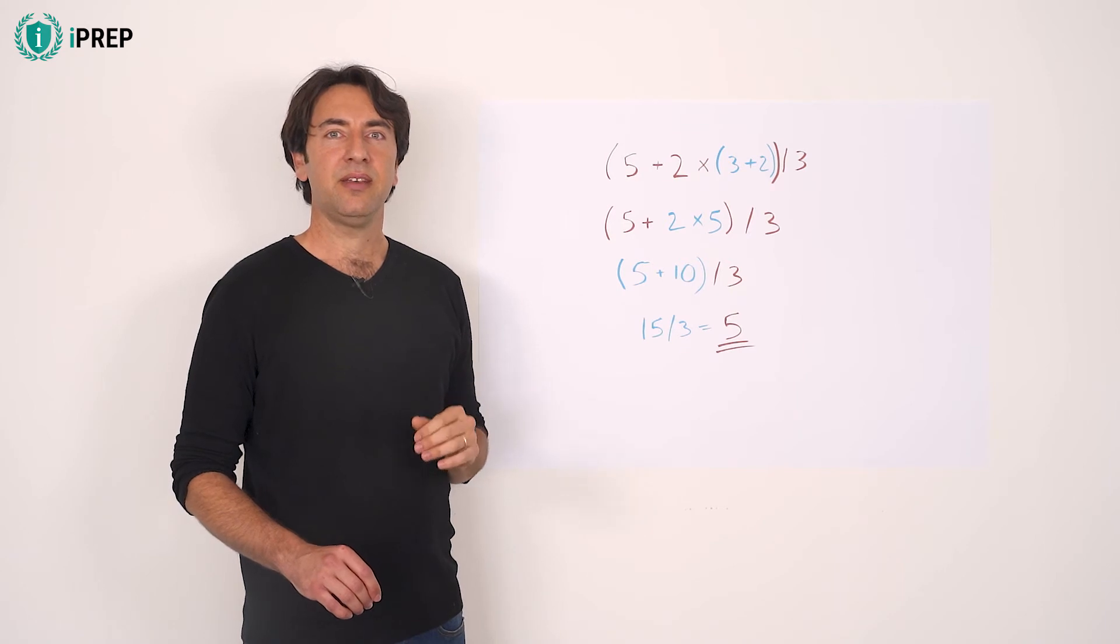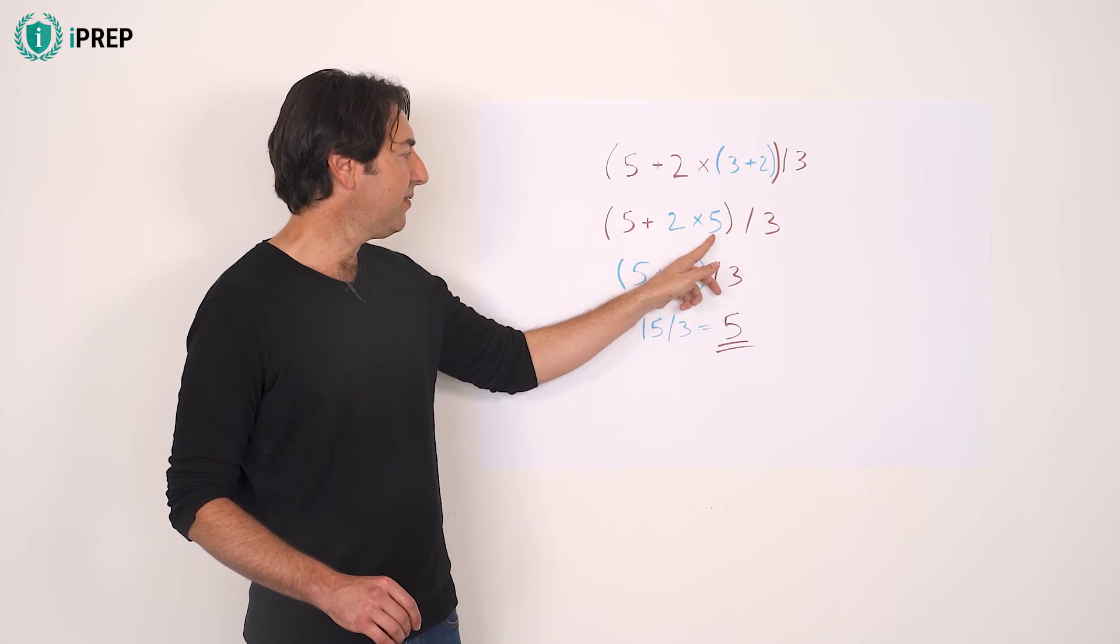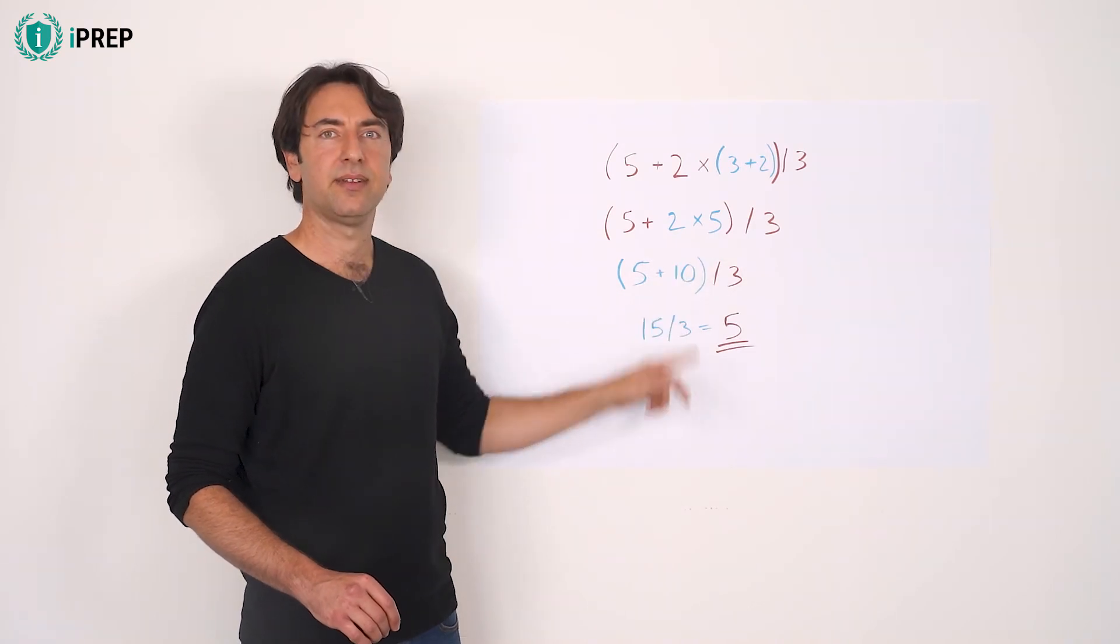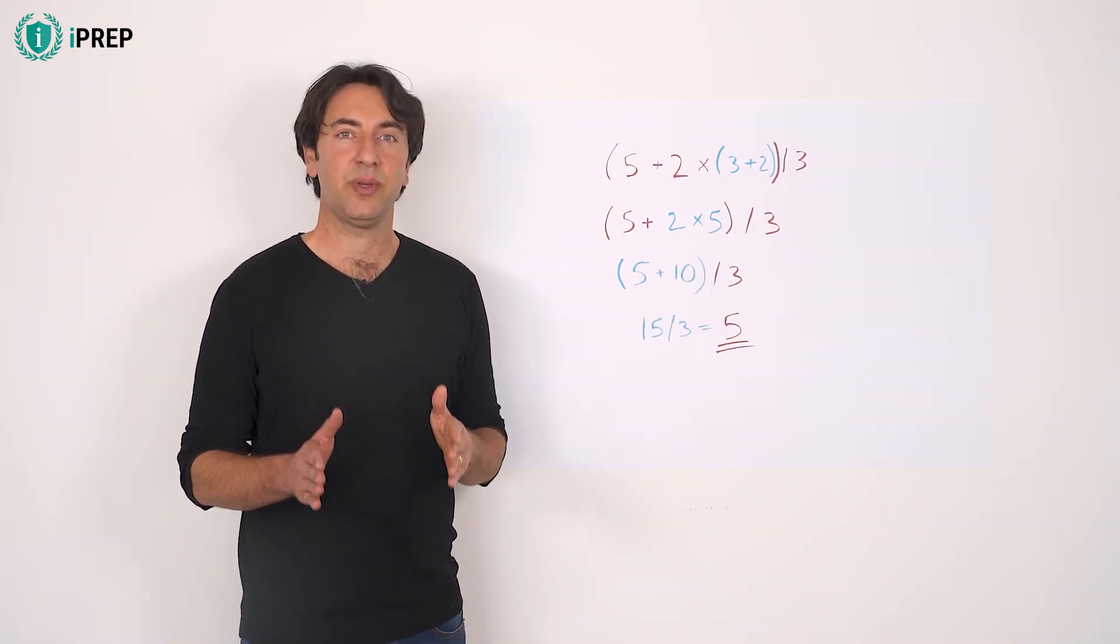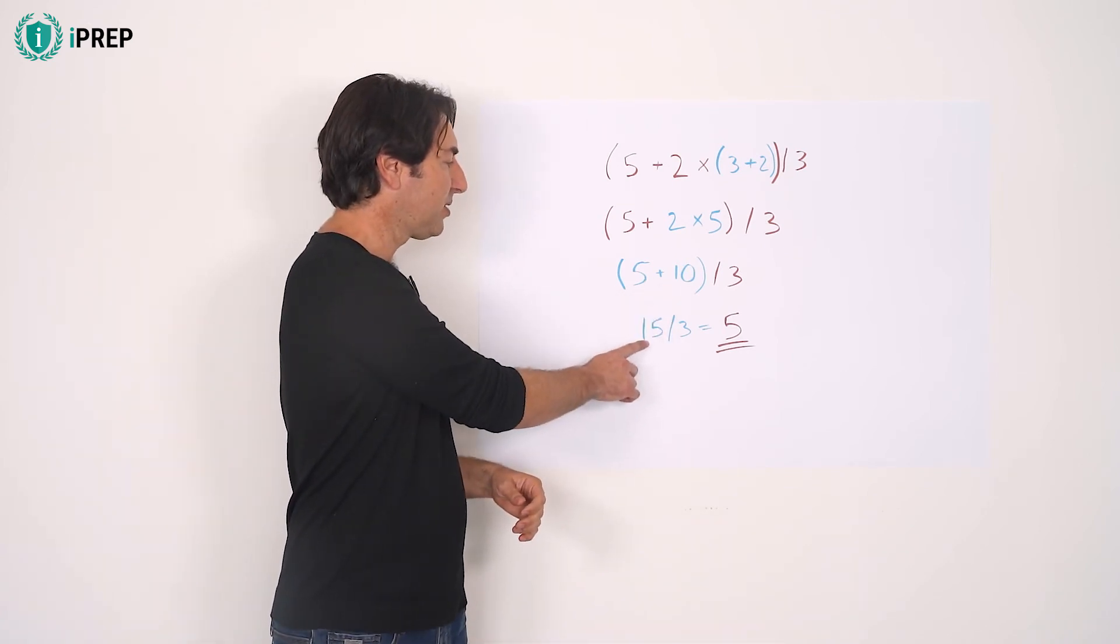Then, multiplication within the parentheses. 2 times 5 equals 10. Then, addition within the parentheses. 5 plus 10 equals 15.